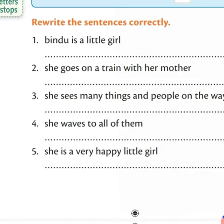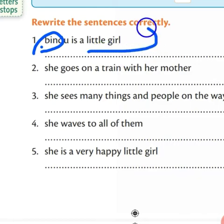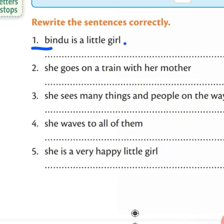Today we will solve this exercise. Number one sentence, you can see on your screen: 'Bindu is a little girl.' Is the first letter of Bindu capital? No. So it means there is a need of correction. The first letter of Bindu should be capital, and there should be a full stop at the end of the sentence. This system of symbols is called punctuation. So you have to write this sentence as: 'Bindu is a little girl.' with a full stop at the end.